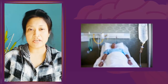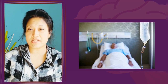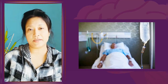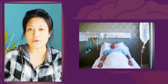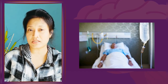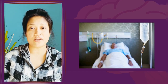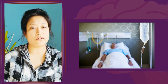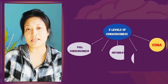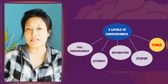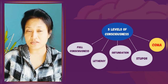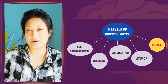Much of the examination of an unconscious patient is carried out through observation, which is done repeatedly. The degree of altered consciousness must be decided on the first visit to ensure proper recording of progress on future visits. Five different levels of consciousness have been identified: fully conscious, lethargy, obtundation, stupor, and coma.